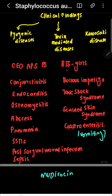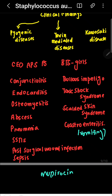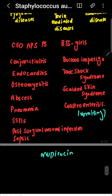For toxin-mediated diseases, use the mnemonic 'BTS girls': bullous impetigo, toxic shock syndrome, scalded skin syndrome, and gastroenteritis. An important note: diarrhea and vomiting are prominent features of gastroenteritis. Kawasaki disease is also related. For scalded skin syndrome, the topical antibiotic mupirocin is used.